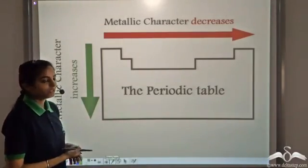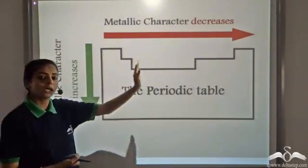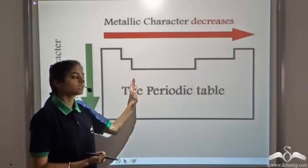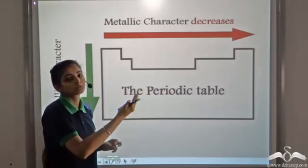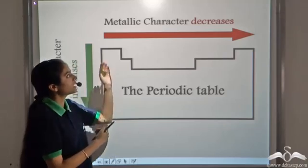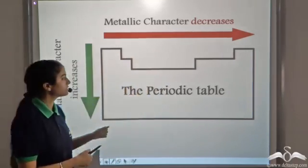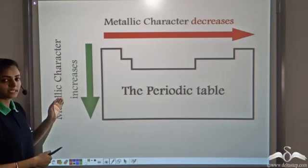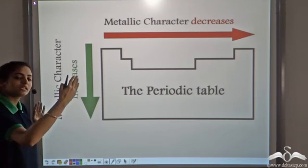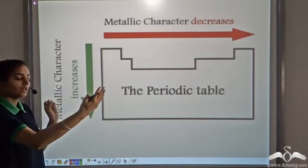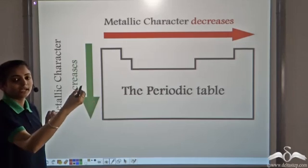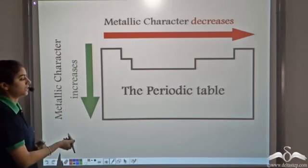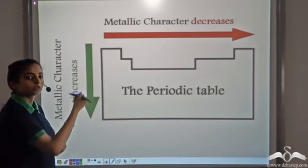In summary, in a periodic table, when we move from left to right in a period, the atomic size decreases. Due to the decrease in atomic size, the ease to remove the electrons also decreases and so the metallic character decreases. When we move from top to bottom in a group, the atomic size increases. This leads to increased distance between the outermost shell and the nucleus, so the electrons are held loosely, they can be easily removed, and the metallic character increases on moving from top to bottom in a group.